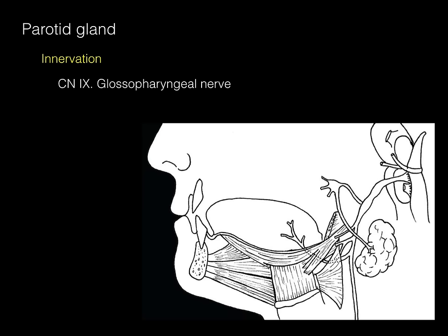Cranial nerve 9, the glossopharyngeal nerve, provides the innervation. In this illustration, the glossopharyngeal nerve is outlined in yellow. A preganglionic parasympathetic neuron in the medulla sends its axon out via CN9, then hitchhikes onto cranial nerve V3. There is a ganglion hanging off the trunk of V3 called the otic ganglion. The postganglionic parasympathetic neuron then arises and hitchhikes via the auriculotemporal nerve — a branch of V3 — to innervate the parotid gland. This is visceral motor parasympathetic innervation from cranial nerve 9.